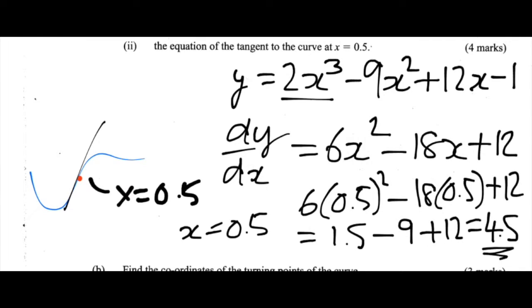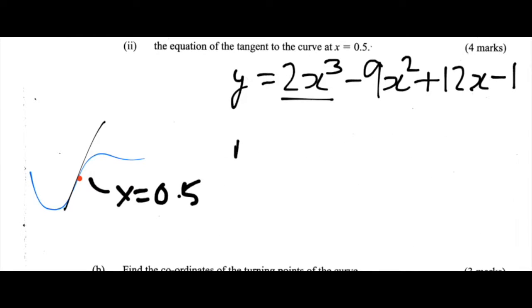So that gives us not only dy by dx, or the gradient of the curve at the point where x is equal to 0.5, but it also gives us the gradient of the tangent of the curve at that point. So we now know that m, or the gradient of the tangent, at the point where x is equal to 0.5, is 4.5.